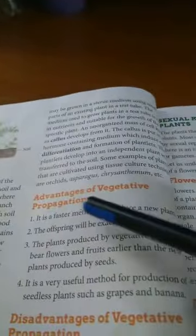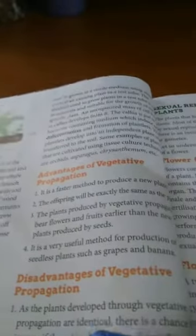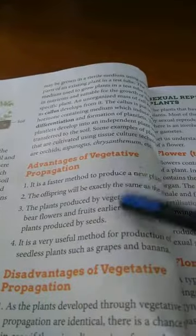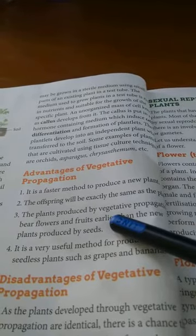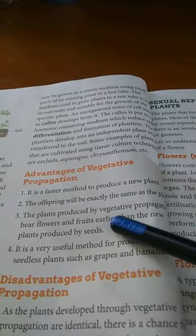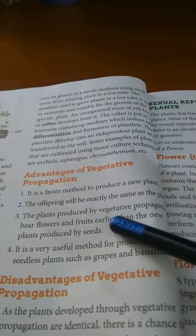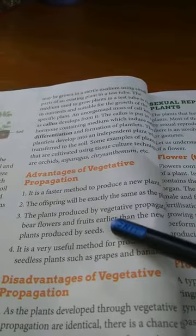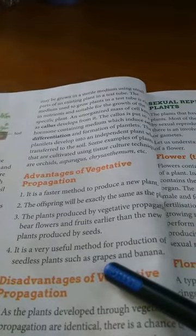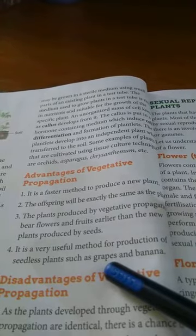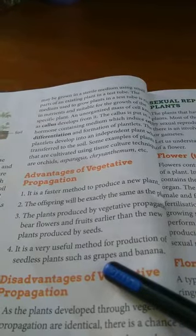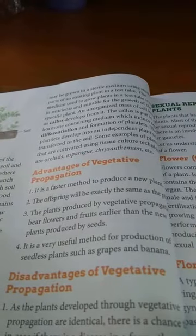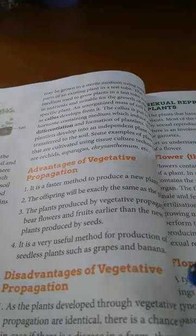Tissue culture and vegetative propagation have several advantages. First, it is a very fast method of growing plants. Second, all the offspring produced are exactly similar to their parents — they are copies with no variations. Third, plants produced by vegetative propagation bear flowers and fruits earlier. Additionally, it is very useful for producing seedless plants such as grapes and bananas, which do not have seeds and can be grown easily by this method.